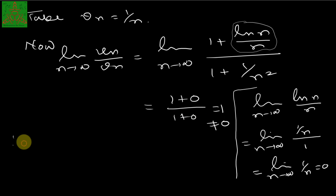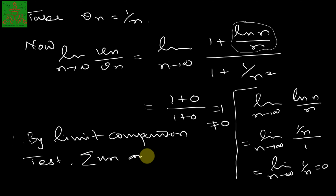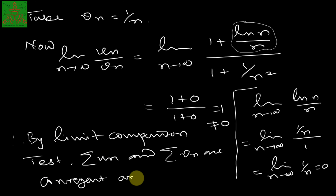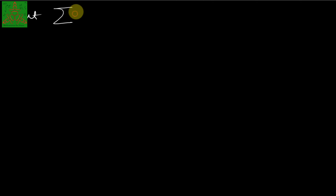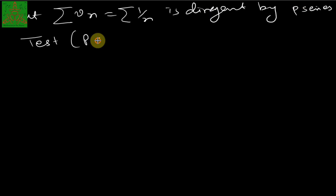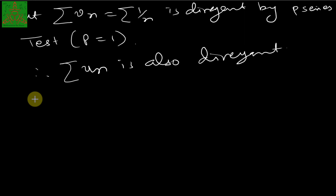Since lim(ln n / n) = 0, the overall limit of u_n / v_n = (1 + 0)/(1 + 0) = 1, which is a finite non-zero number. By the limit comparison test, summation of u_n and summation of v_n are convergent or divergent together. Since summation of 1/n is divergent by p-series (p = 1), summation of u_n is also divergent.